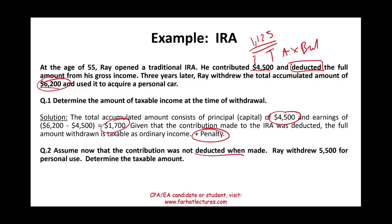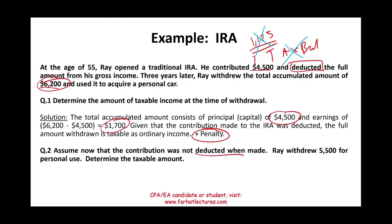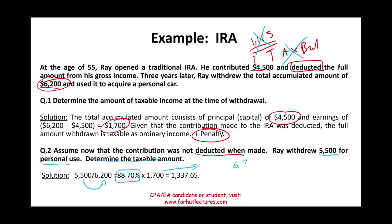Now assume the contribution was not deducted. Ray contributed $4,500 but did not get a tax break. Ray then withdrew $5,500 for personal use. We need to determine the taxable amount. Since it was not tax deductible, we have to prorate it. We take the amount withdrawn divided by the value of the account: $5,500 divided by $6,200 equals 88.7%. The earnings — the taxable component — is $1,700 (because Ray contributed $4,500 and the account value is $6,200). We multiply $1,700 by 88.7%, so $1,337 is the taxable amount.